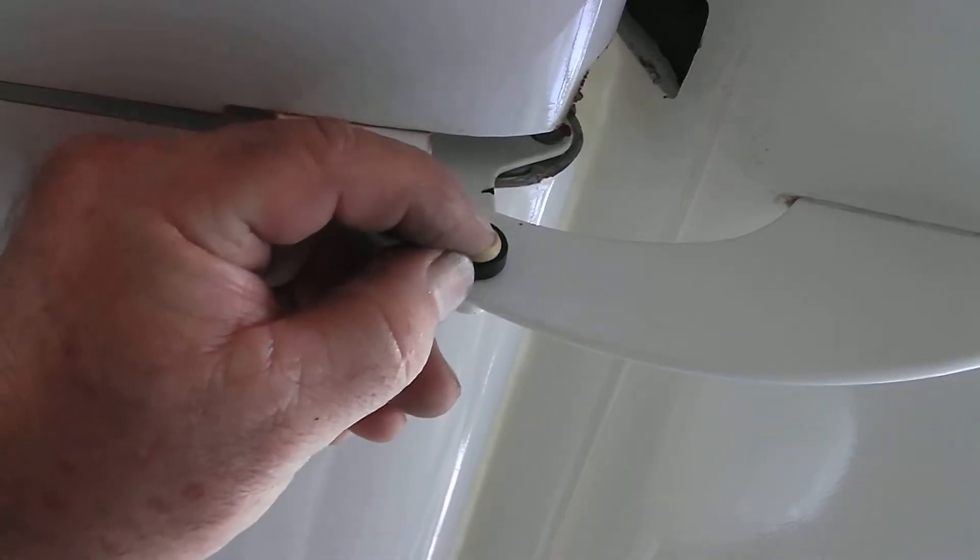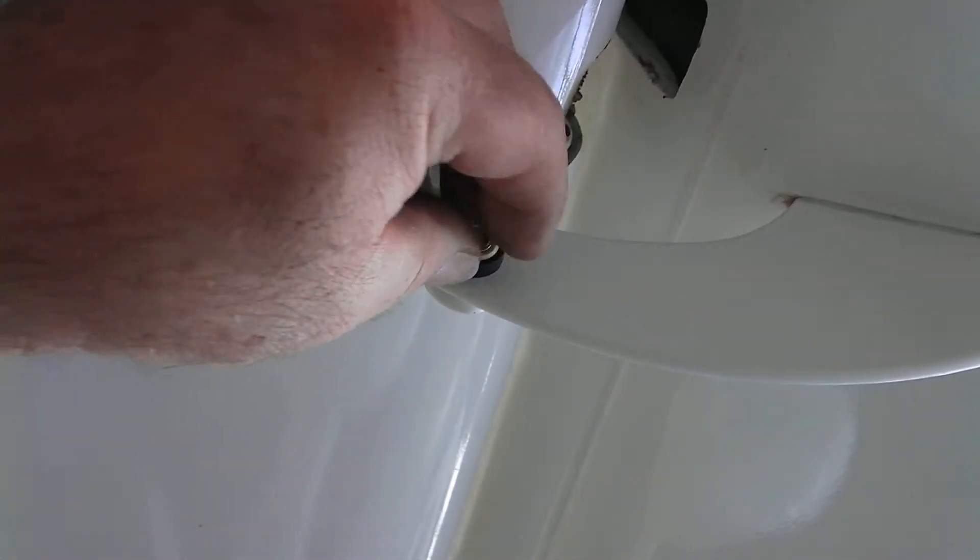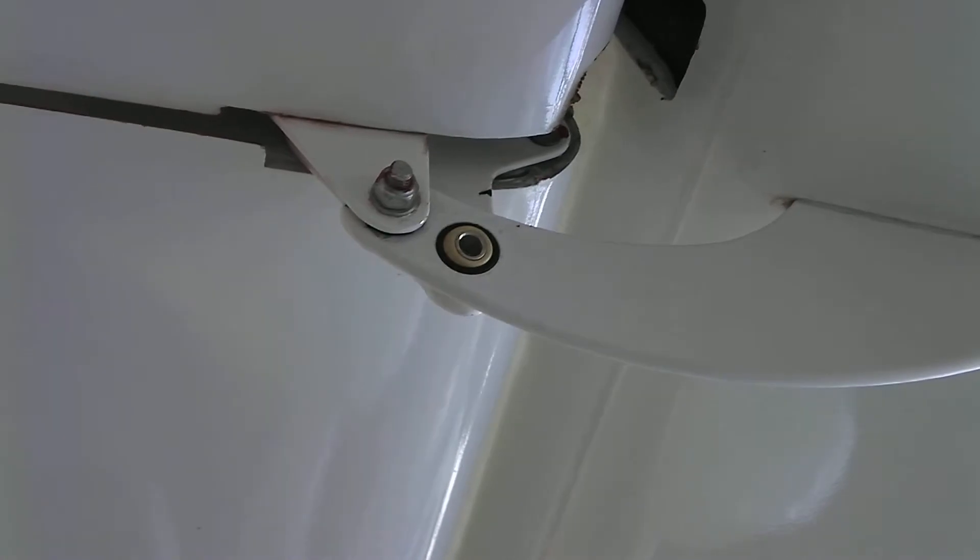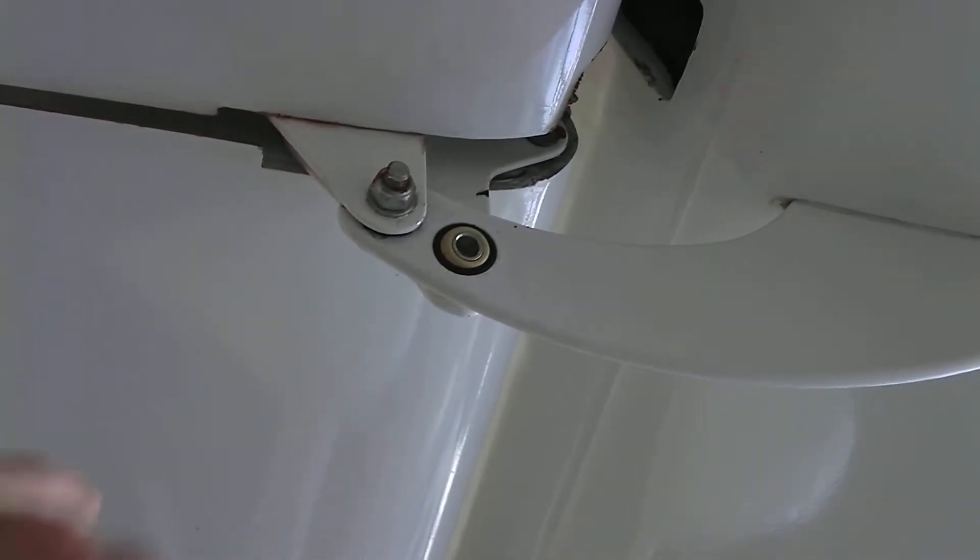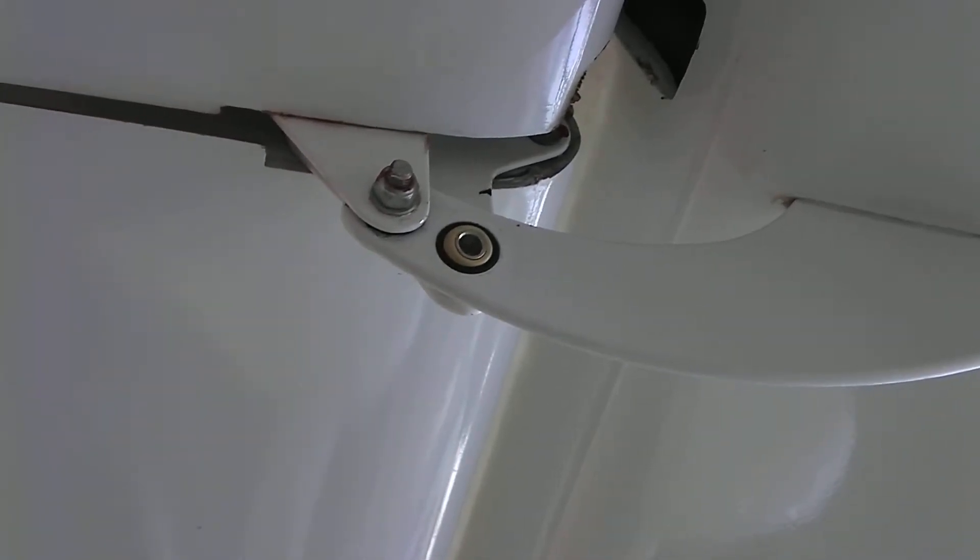This little black bearing goes up inside of here and it fits back inside this hole. That's where that live bearing centers. Now these come loose and so they need to be re-glued.